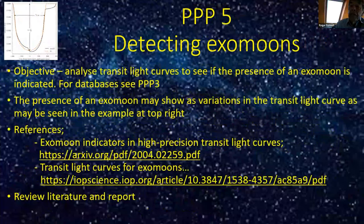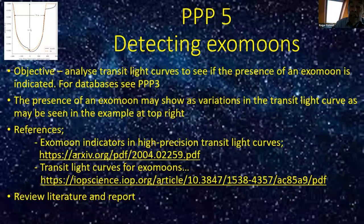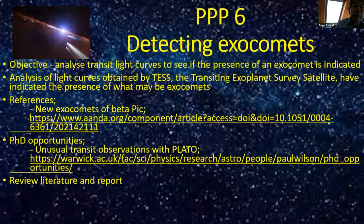PPP5: the objective is the detection of exomoons by observing variations in the transit light curve, as shown in the diagram. These last two projects are definitely pushing the envelope, but someone out there may feel up to the challenge. You may just wish to review all the relevant literature and light curves and maybe write an article telling us yes, it's possible, or no, it isn't, or yes, there are some examples worth following up. PPP6, similarly, is a very difficult project — to examine light curves to see if the presence of an exocomet is indicated.